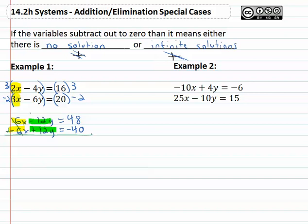So when we add them together, they both subtract out completely to zero, and we're left with 0 = 48 - 40, which is 8. Well wait a minute, does zero equal eight? Does that make sense?